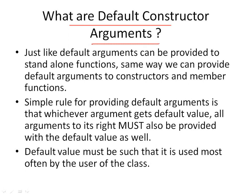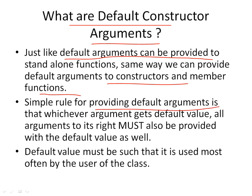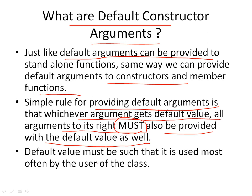So what are the default constructor arguments? Just like default arguments can be provided to standalone functions, the same way we can provide default arguments to constructors and member functions. The simple rule for providing default arguments is that whichever argument gets the default value, all the arguments to its right must also be provided with a default value. And usually it makes sense to provide a default value that is used most often by the user of the class.